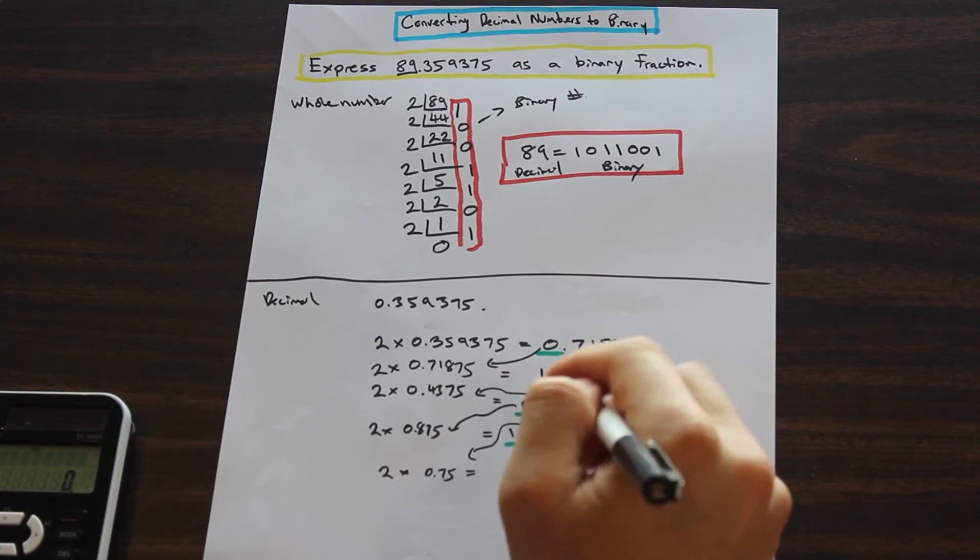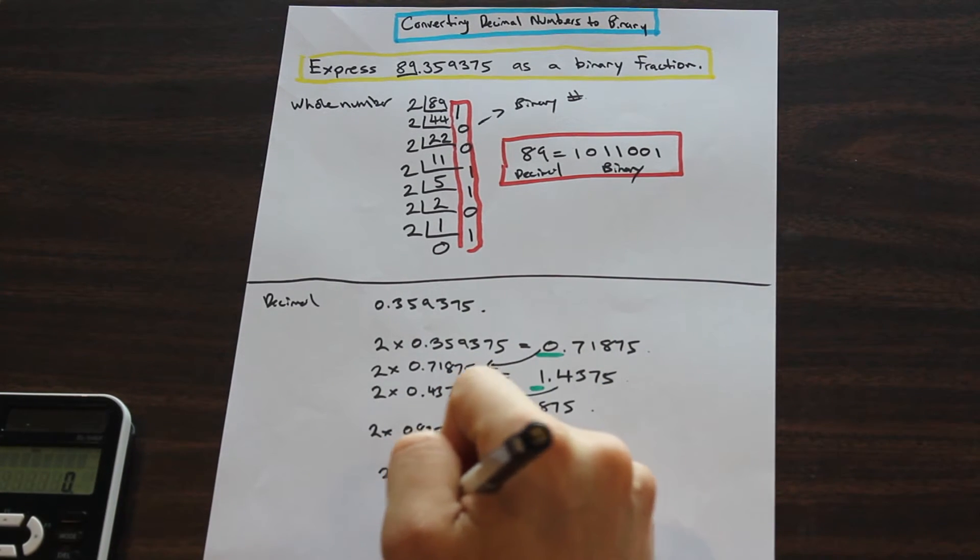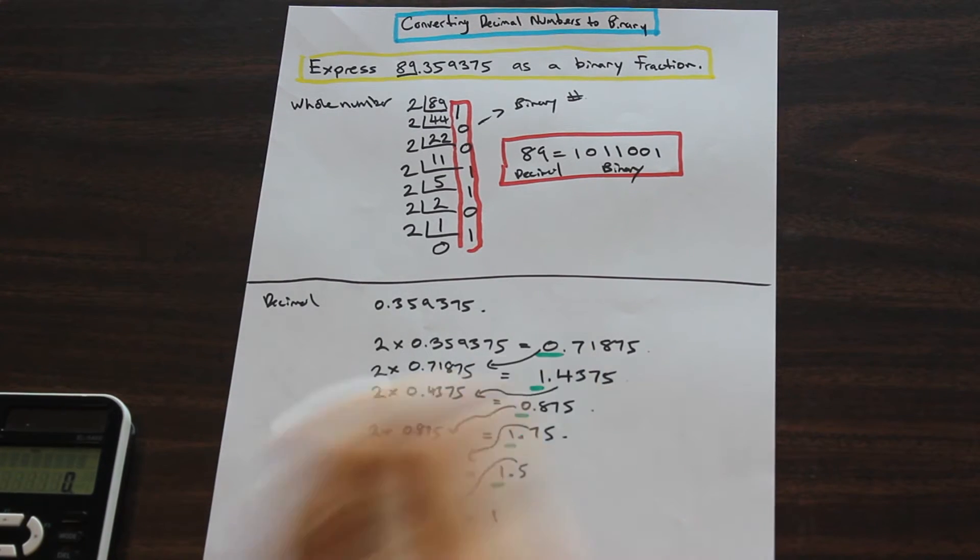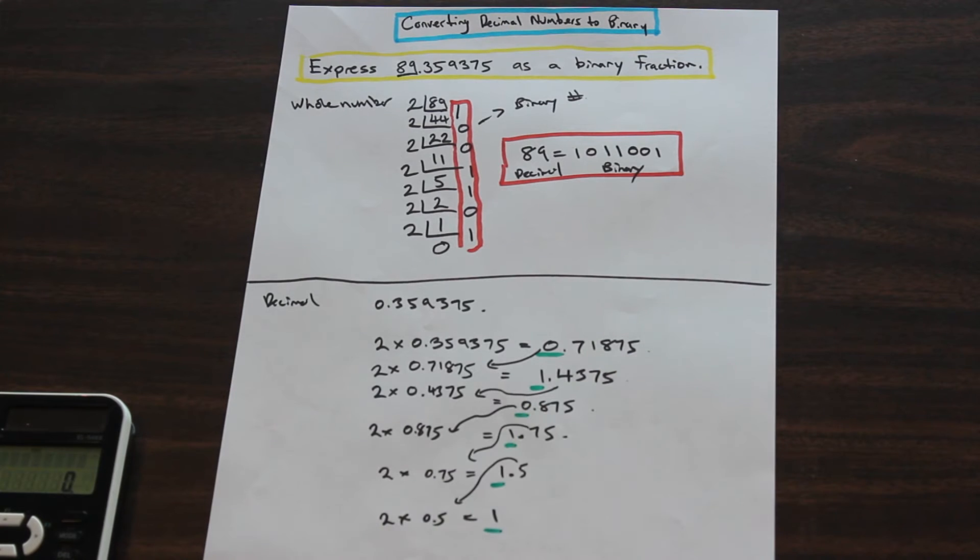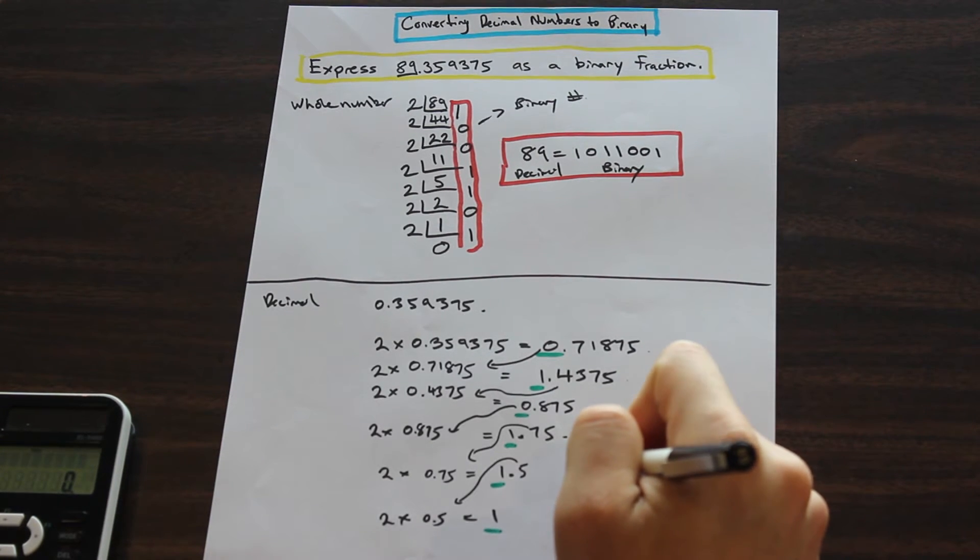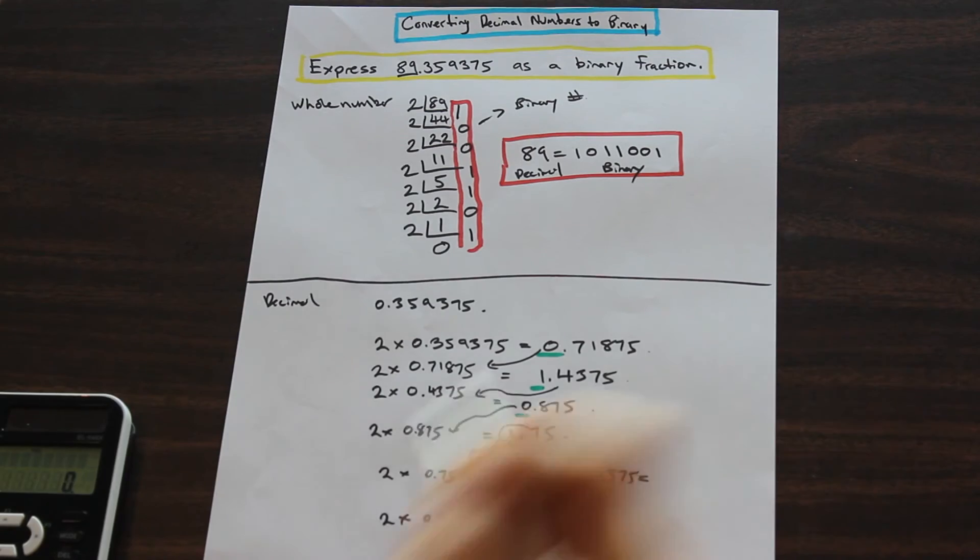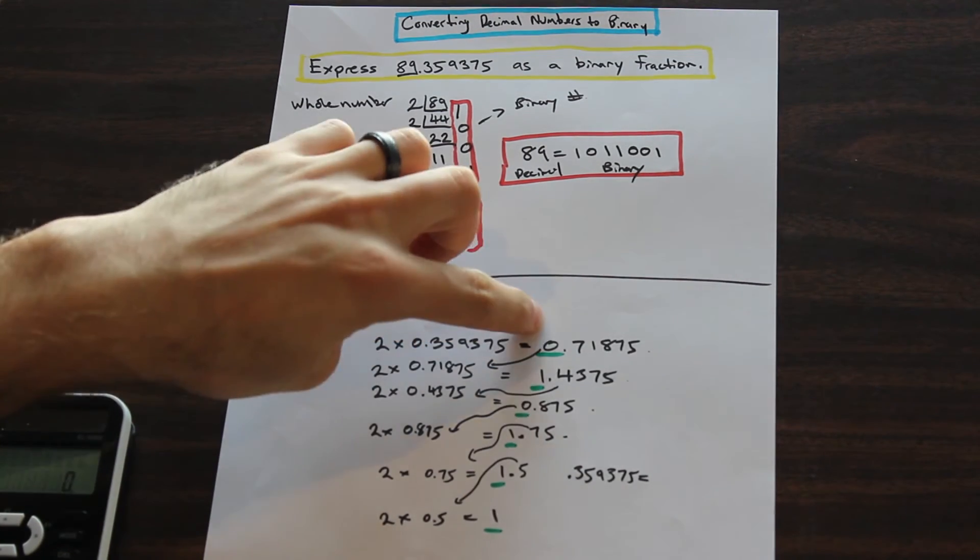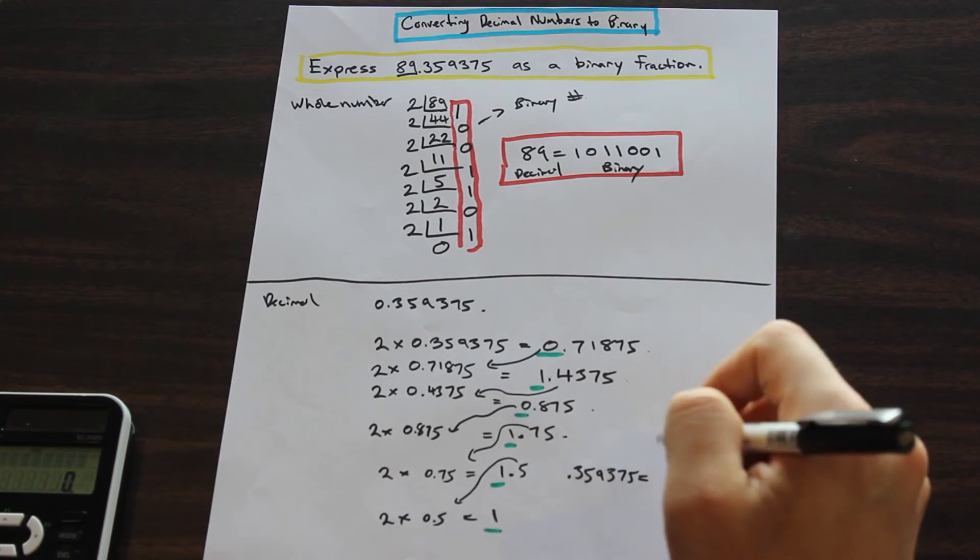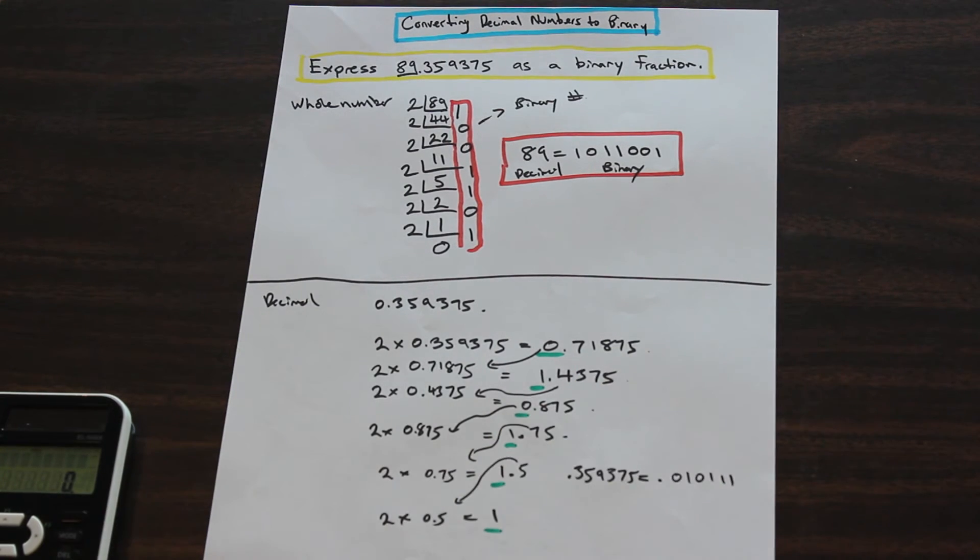As you can see, the number is getting closer and closer to 1. We have 1.5. Reserve the 1. Just take the 0.5 down here. We're going to multiply by 2, and as you can see, we are going to end up with 1. So you'll always end up with a 1 here. That's kind of the moral of the story. What does that equate to? That equates to a decimal value. We'll say that 0.359375 is equal to, we're going to start from the top here. We're going to put a decimal. We're going to just write those numbers as they are there. So, it's equal to 0.010111 in binary.